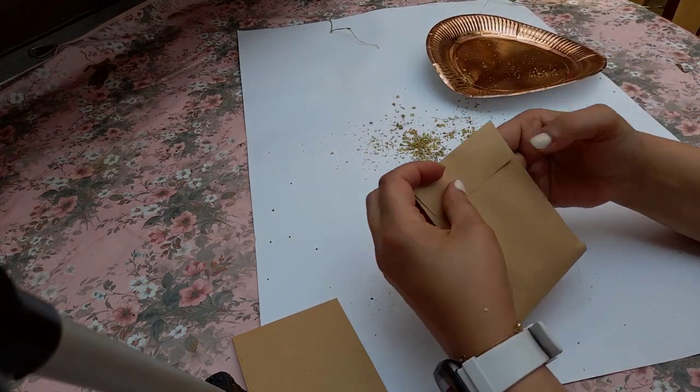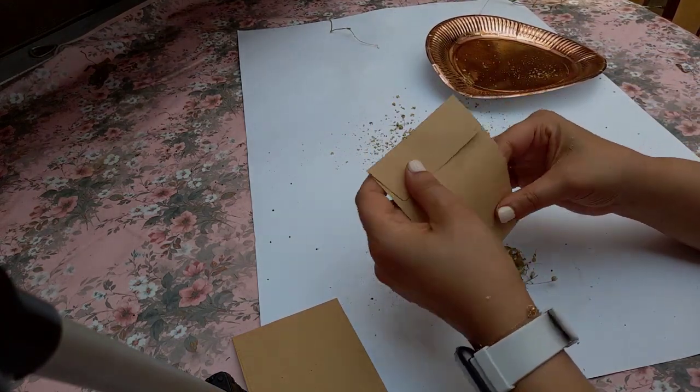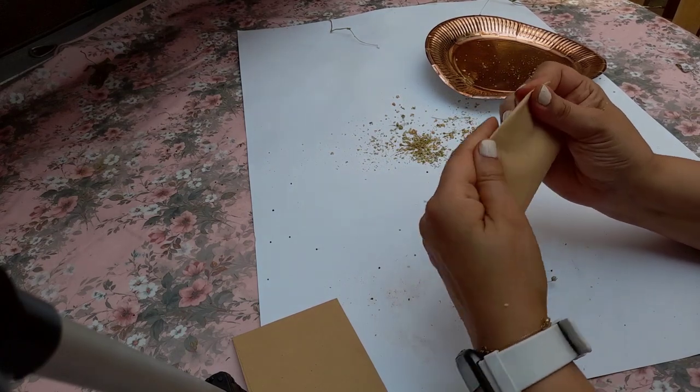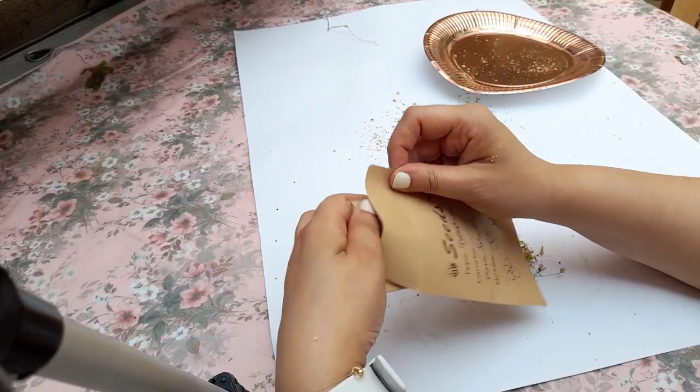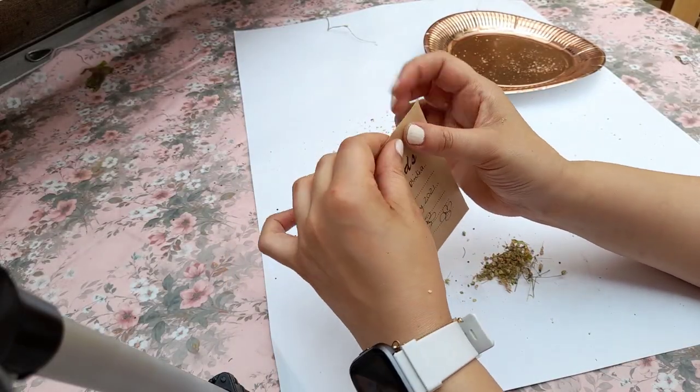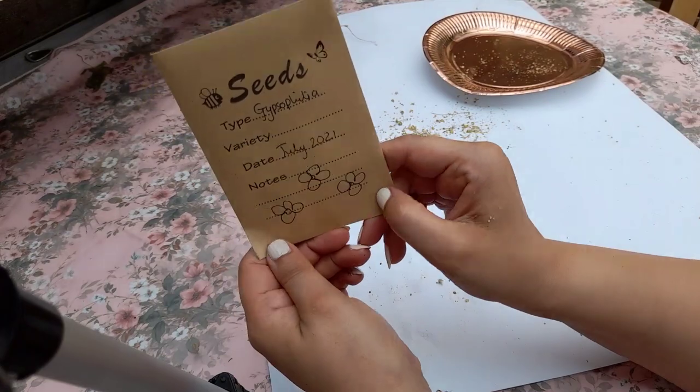So because the seeds are so tiny I decided to use a double envelope method. I put them in one envelope and then put it inside my labeled envelope and that hopefully will keep them secure and stop them from spilling.